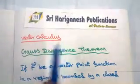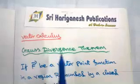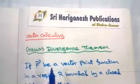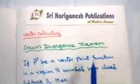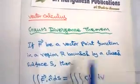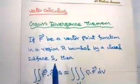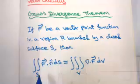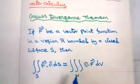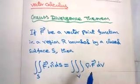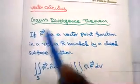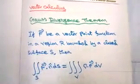Vector calculus: Gauss Divergence Theorem. If F is a vector point function in a region bounded by a closed surface S, then the double integral over S of F·n dS equals the triple integral over V of del·F dV. This is the statement of the Gauss Divergence Theorem.